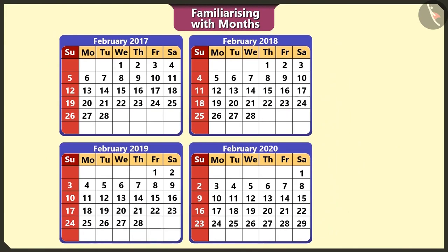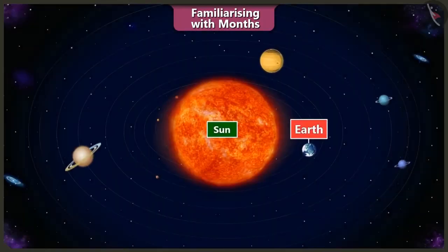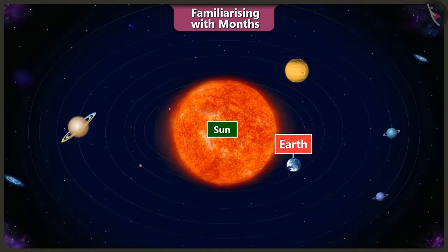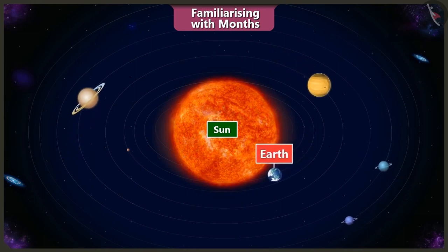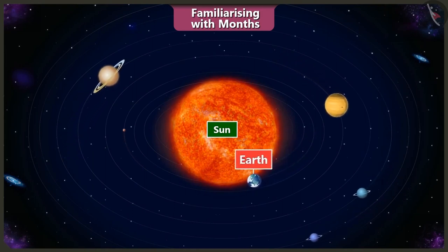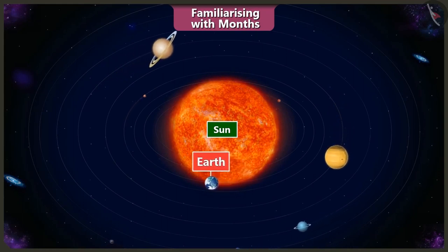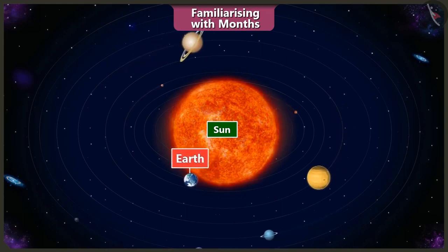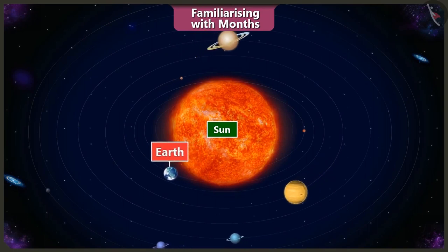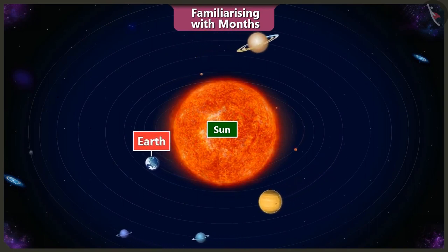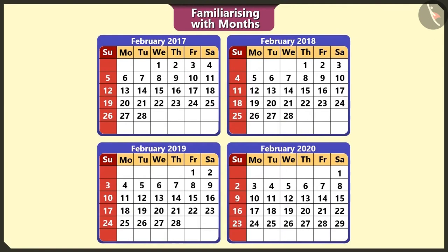But once in every 4 years, there are 29 days in February. Because it takes 365 days and 6 hours for the Earth to complete one revolution around the Sun. These remaining 6 hours of every year added together for 4 years becomes 1 day. So every 4th year, the month of February has 29 days, which is called a leap year.